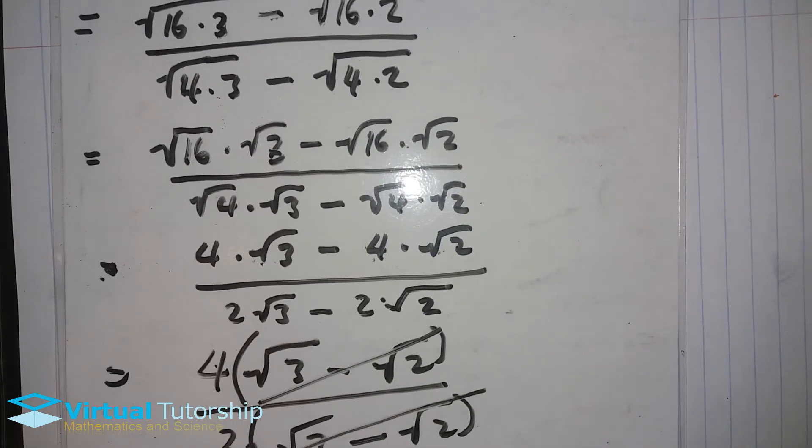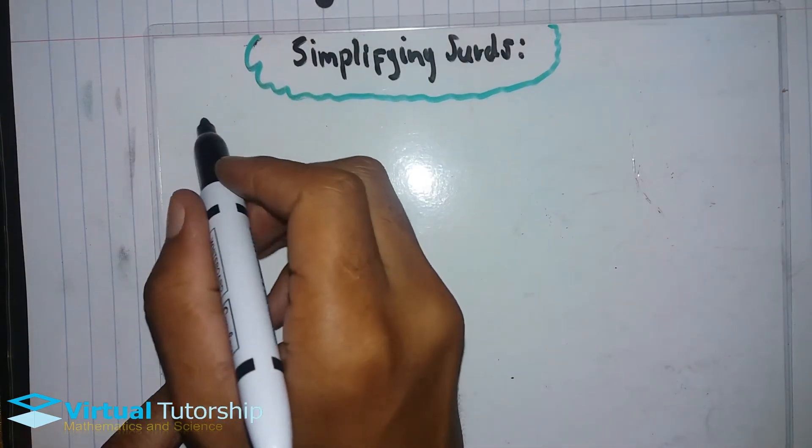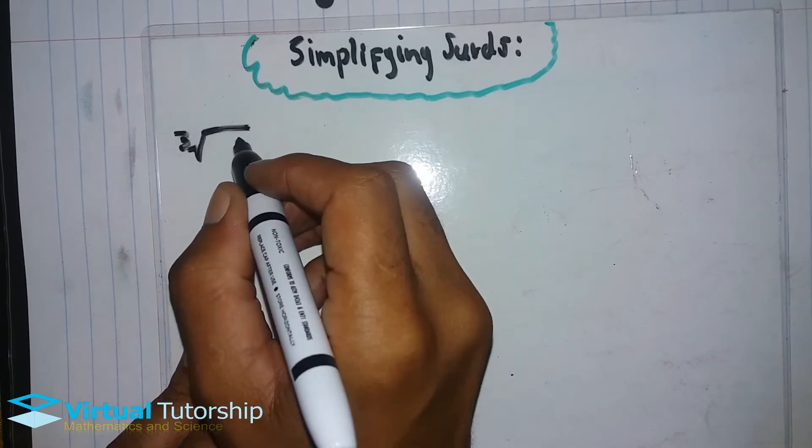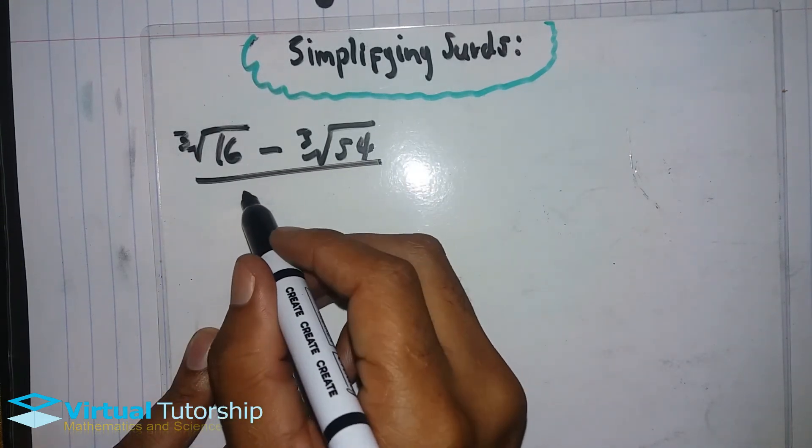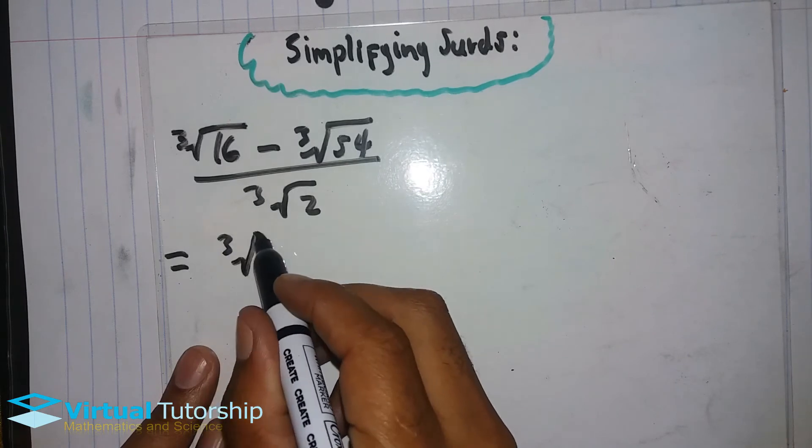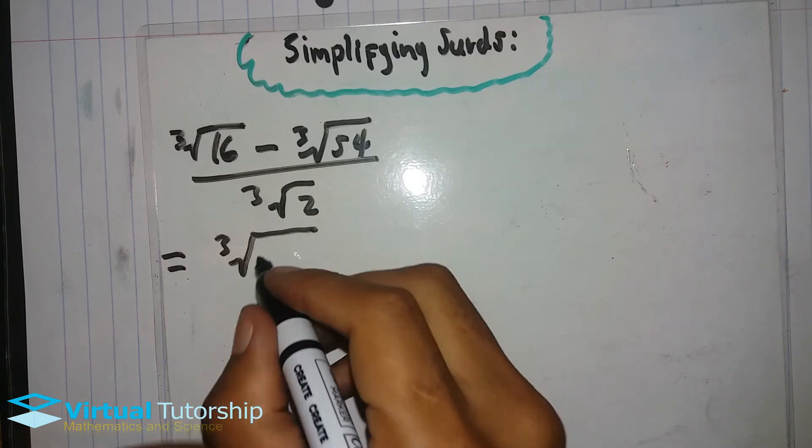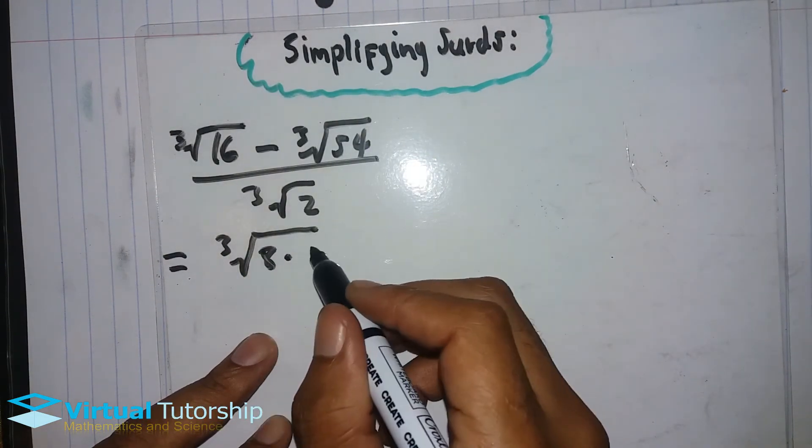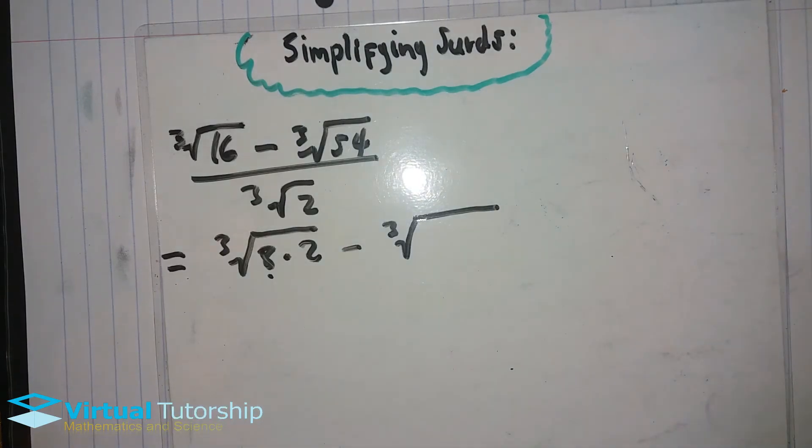Let's do one last example. The cube root of 16 minus the cube root of 54 over the cube root of 2. When you have a cube root with a non-prime basis, rewrite it as a product of a prime number and a perfect cube. In this case, it's 8 times 2. 8 is a perfect cube.